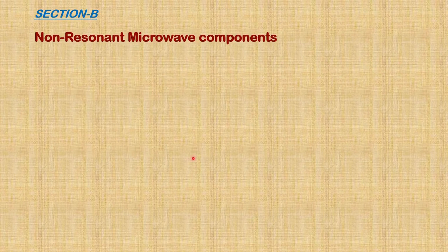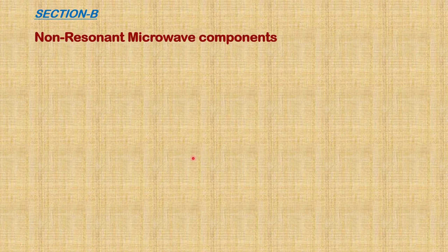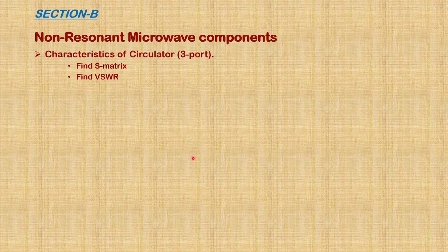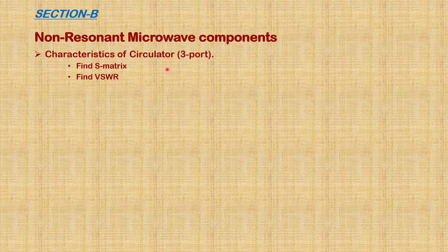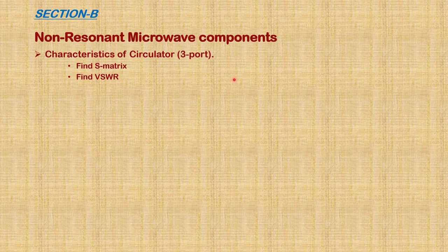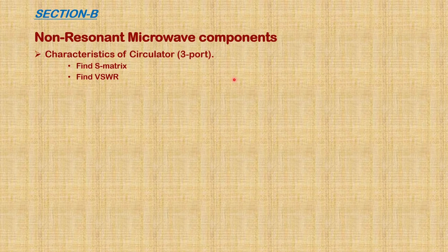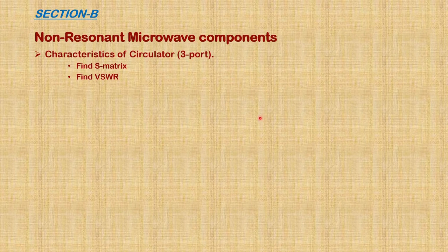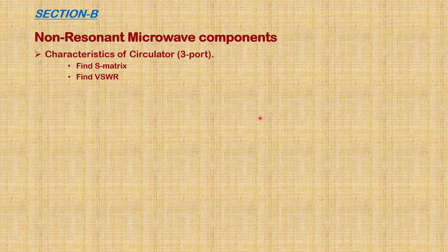In Section B, another part is non-resonant microwave components. The first experiment is the circulator. A circulator is a three-port or multi-port network. In this lab, we have T-junction and Y-junction three-port circulators. If we feed power into one of the ports, that power is observed in the next port in a circular direction, and other ports are isolated from the input port.